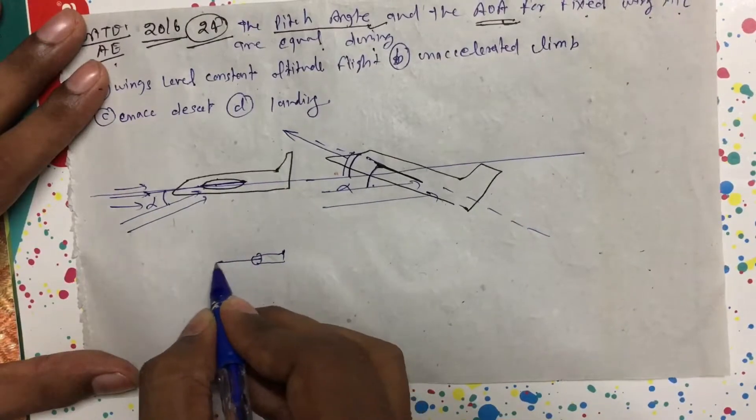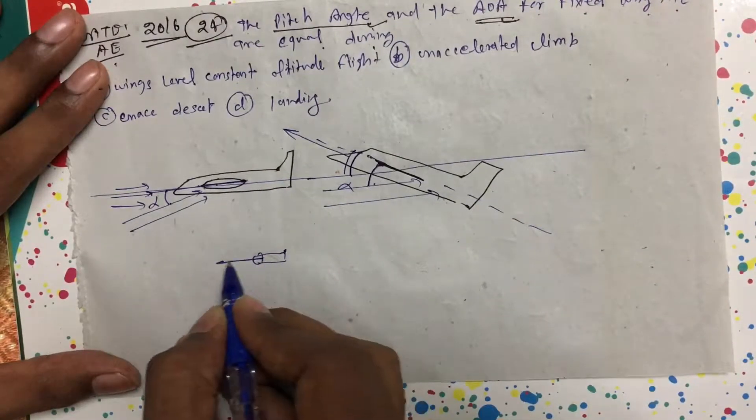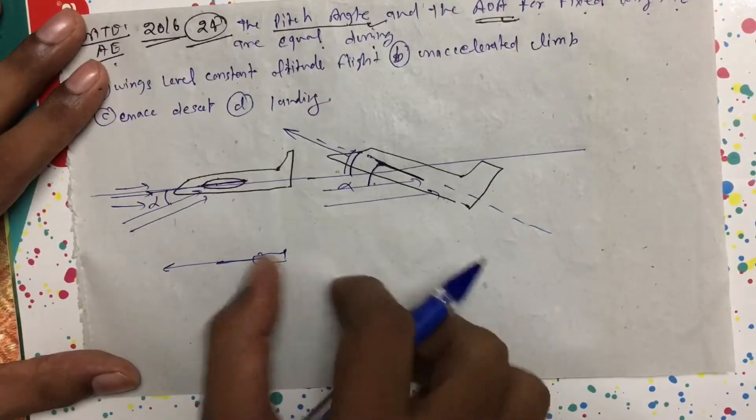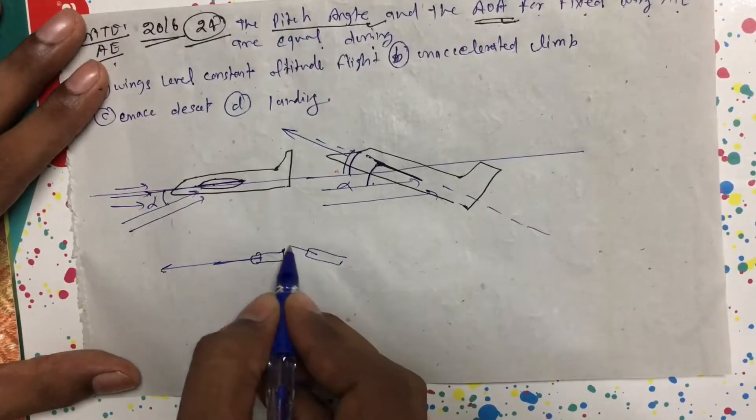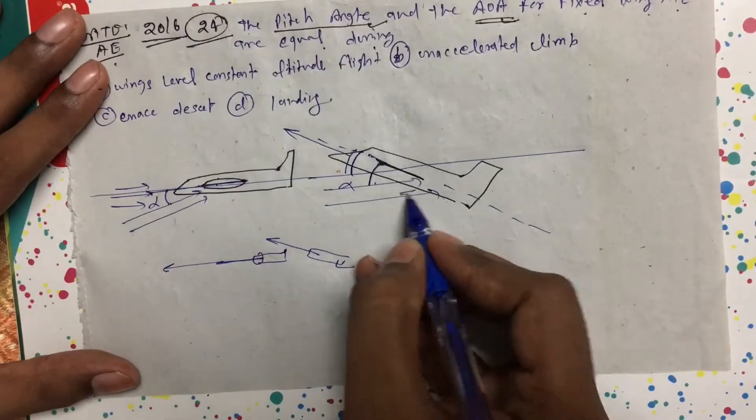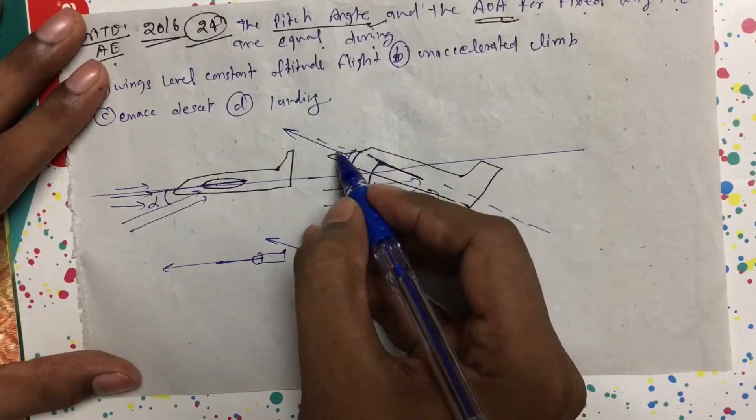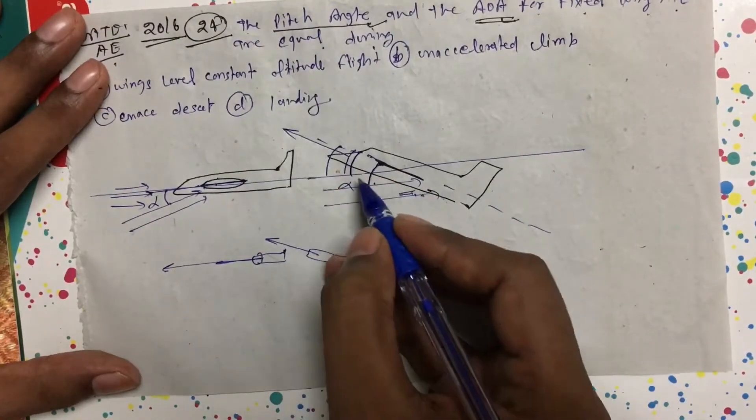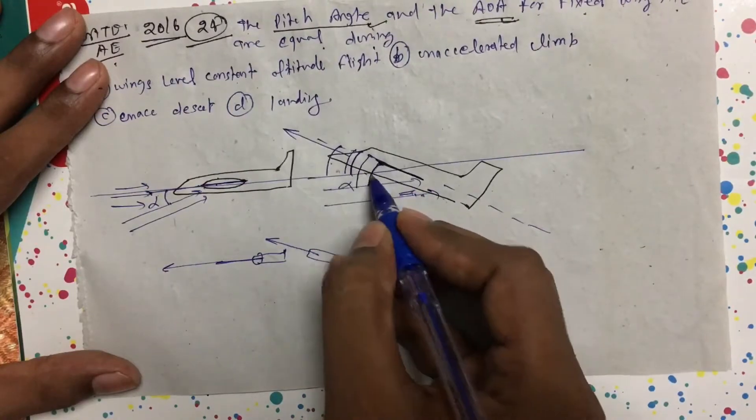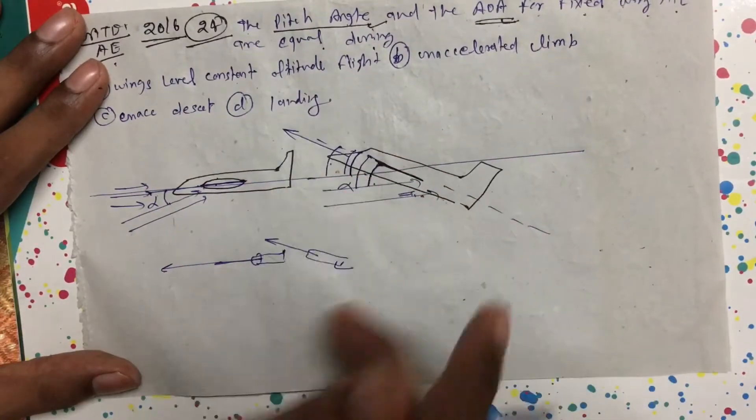But if your engine is tilted like this, then your engine will go up - that is called climb. This is the climbing case. So you see, pitch angle and angle of attack, they are not the same in case of climb.